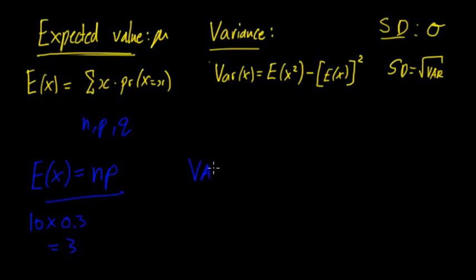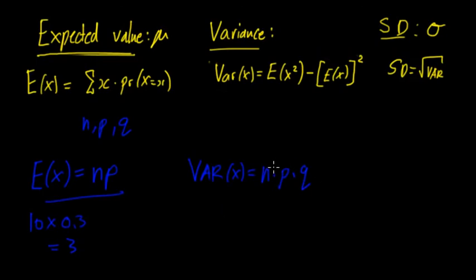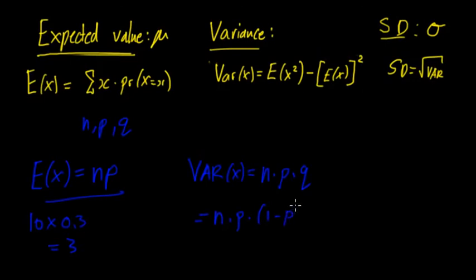Now the variance of X is equal to n times p times q. You don't really need to understand why this is the case, you just need to remember it: n times p times q. Another way you can think about it is n times p times (1 minus p).